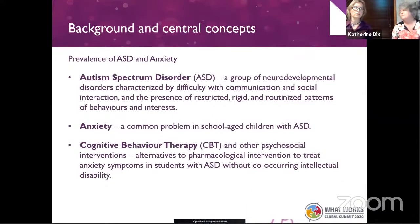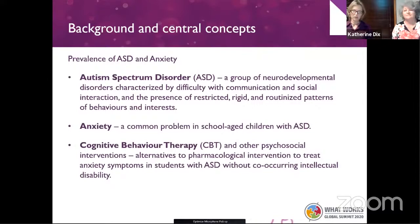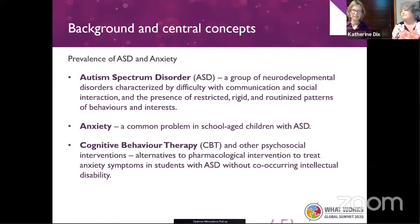Why did we look at what we looked at? ASD and the whole spectrum of disabilities has quite large prevalence. It's estimated that in the US it's about one in 59 school-aged children, and in Australia about one in 150. Of those, it's estimated that about 40 to 50 percent have anxiety issues.